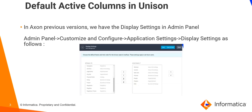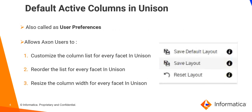In Axon previous versions, we have the display settings in the admin panel. This allows the Axon super admin to configure the default active facets and the order in which they must appear in the unison grid for all the Axon users. However, this does not include any settings for the unison grid such as which columns should be visible in the facet grid, what should be the order of the columns, and what should be the size of the column display. In order to address these requirements, a new feature called default active columns in unison grid is introduced in Axon version 7.2.